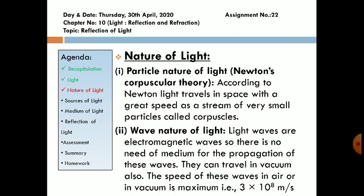Now, wave nature of light. Light waves are electromagnetic waves. So there is no need of medium for the propagation of light waves. They can travel in vacuum. And the speed of these waves in air or vacuum is maximum. That is, 3 into 10 raised to power 8 meter per second.